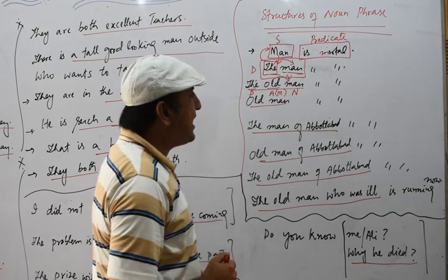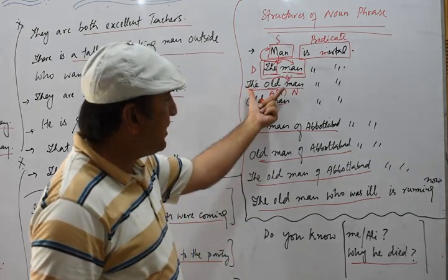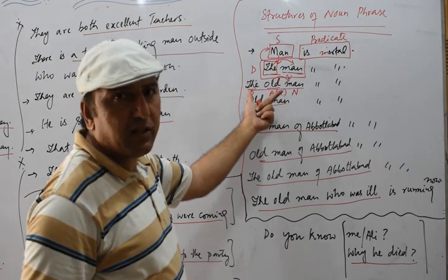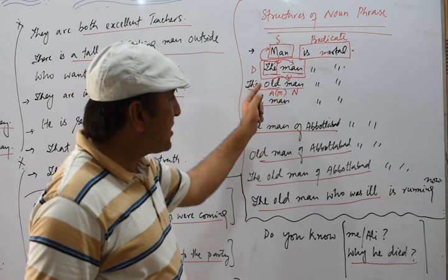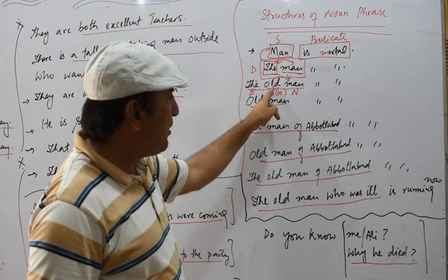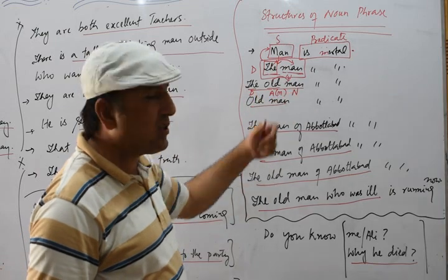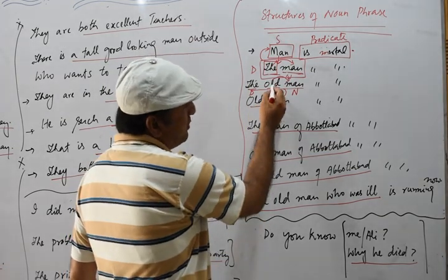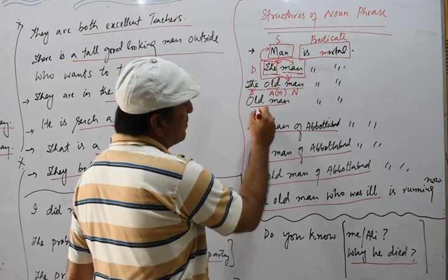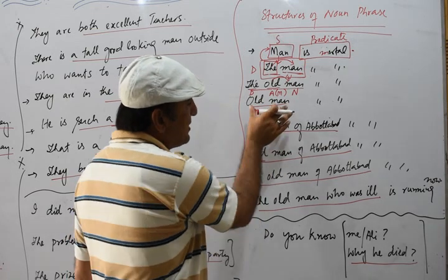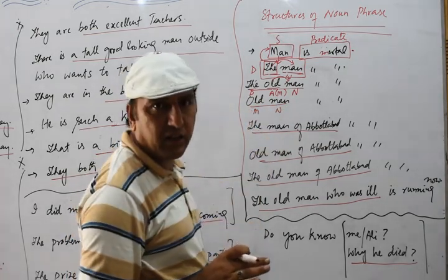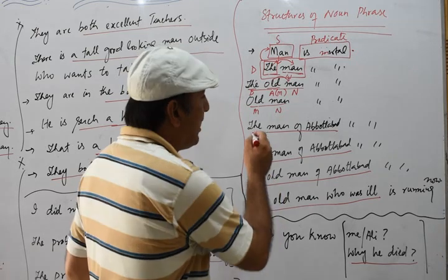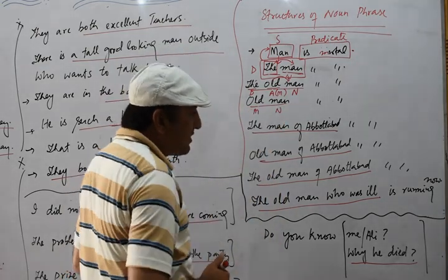So once again we have a group of words — 'the old man' — it does not give complete meaning, so this is a phrase. This is another structure: determiner plus modifier plus noun. So 'the old man' is a noun phrase. We also have 'old man' — here 'old' is modifier and 'man' is noun — so that is also a noun phrase, which is a combination of modifier and noun.